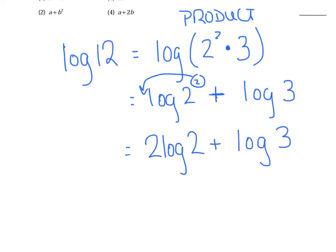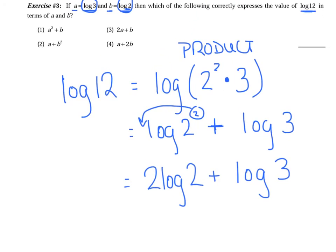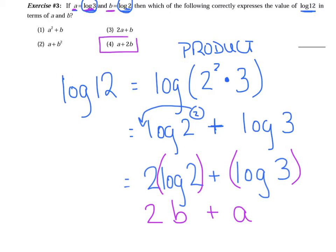Referring back to the original definitions — the log of 2 is equivalent to B. So this is really 2 times B. And the log of 3 is equivalent to A, so I say plus A. Notice it's not the log of B or the log of A — it's just B and just A. That matches choice four.